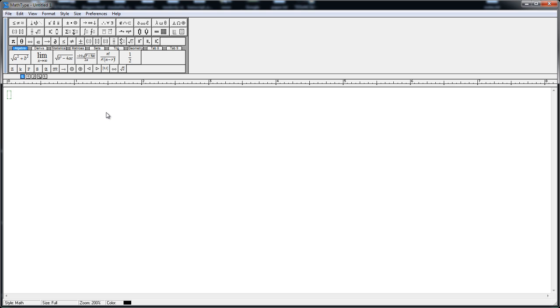So this is the MathType user interface. It has all kinds of options for adding in all kinds of math symbols to help build your equation. For this tutorial, I'm going to use one of their built-in equations. You just simply click here to add in the quadratic formula.